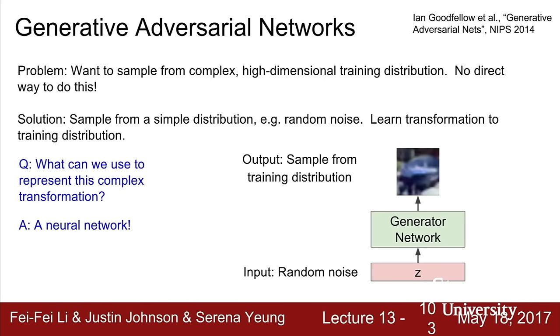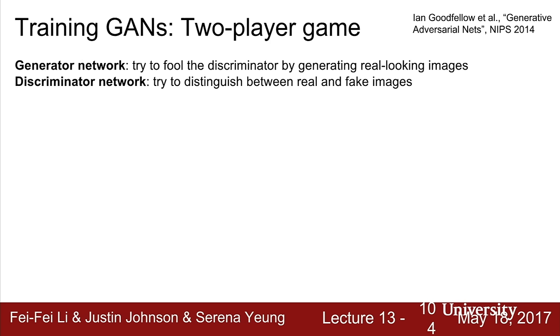We train this as a two-player game. The generator network (player one) tries to fool the discriminator by generating real-looking images. The discriminator network (player two) tries to distinguish between real and fake images. The generator produces fake images from random noise; real images come from the training set. If the generator can successfully fool a well-trained discriminator, we have a good generative model producing images that look like the training data.